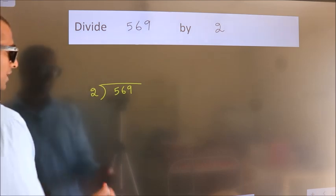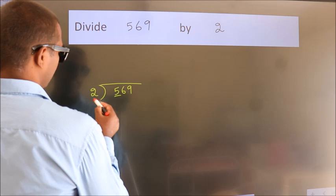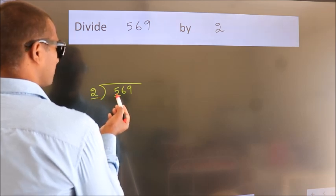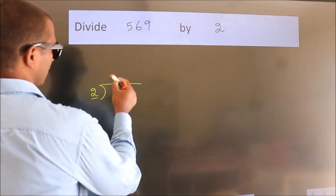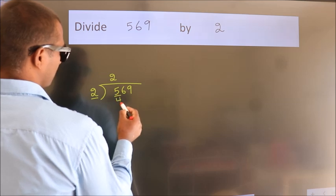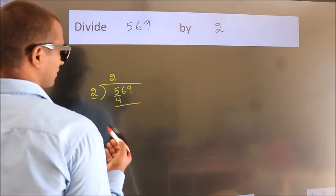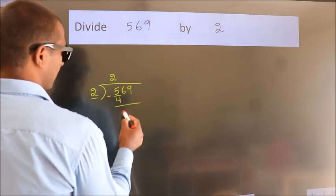Next. Here we have 5, here 2. A number close to 5 in the 2 table is 2 2's 4. Now we should subtract. We get 1.